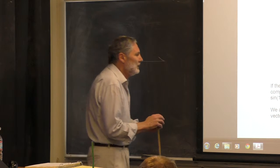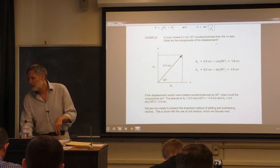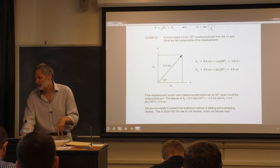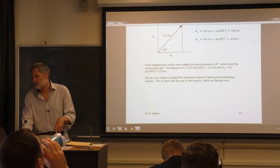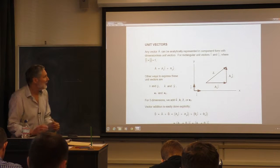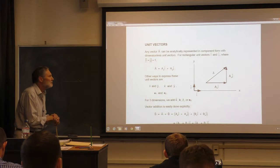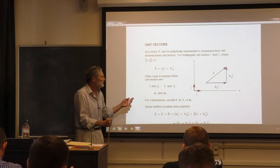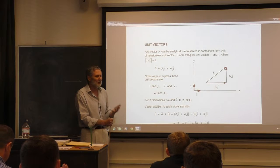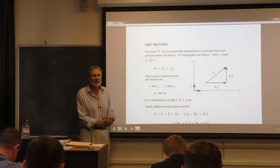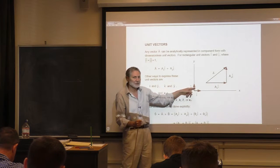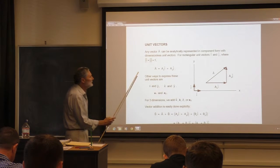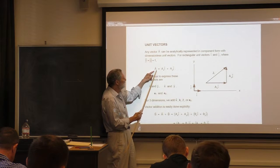The main reason we introduce components is that it allows us to analytically manipulate vectors more easily, for example in addition and subtraction. To do that, we need an analytical representation of a vector in terms of its components. We use unit vectors — these have magnitude 1 and no dimension. We can write A as AX times the unit vector i-hat in the X direction, plus AY times the unit vector j-hat in the Y direction.